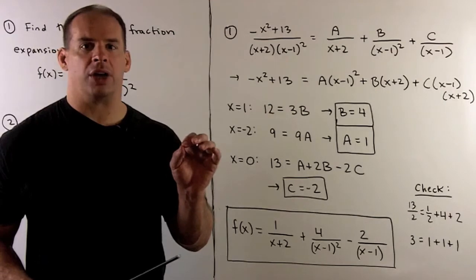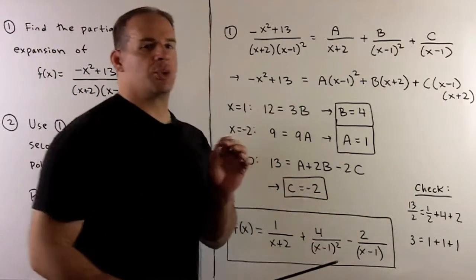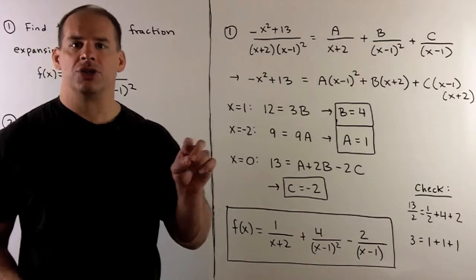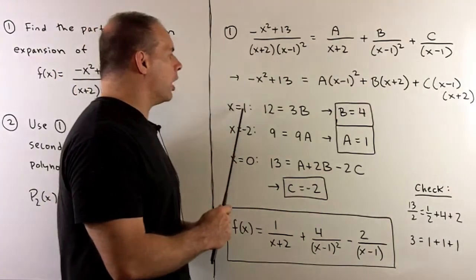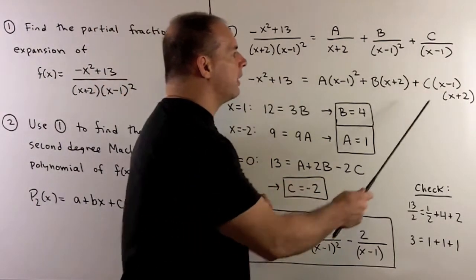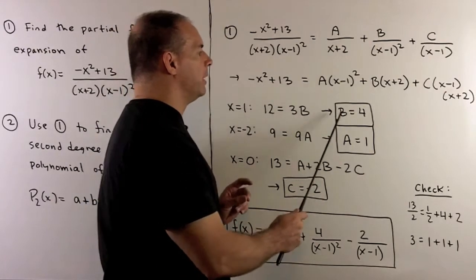Now clear out the denominators. We get this equality here, and then we just want to choose x to target certain factors. If we choose x equal to 1, we get 12. This term goes away, this term goes away, and I'm left with 12 equals 3B, or B is 4.